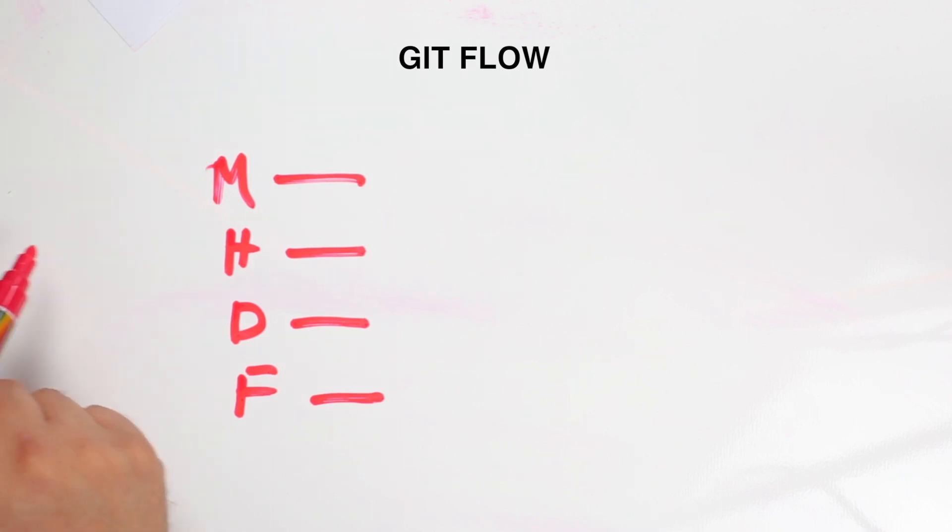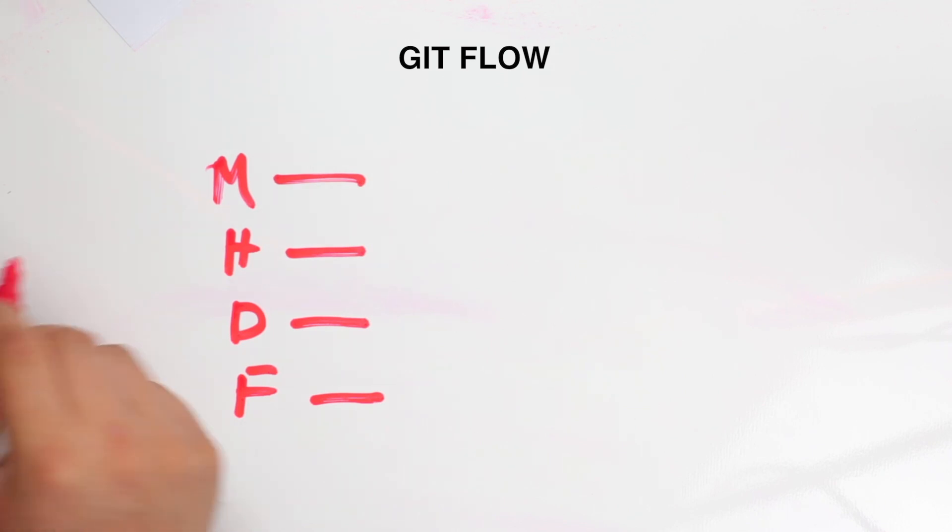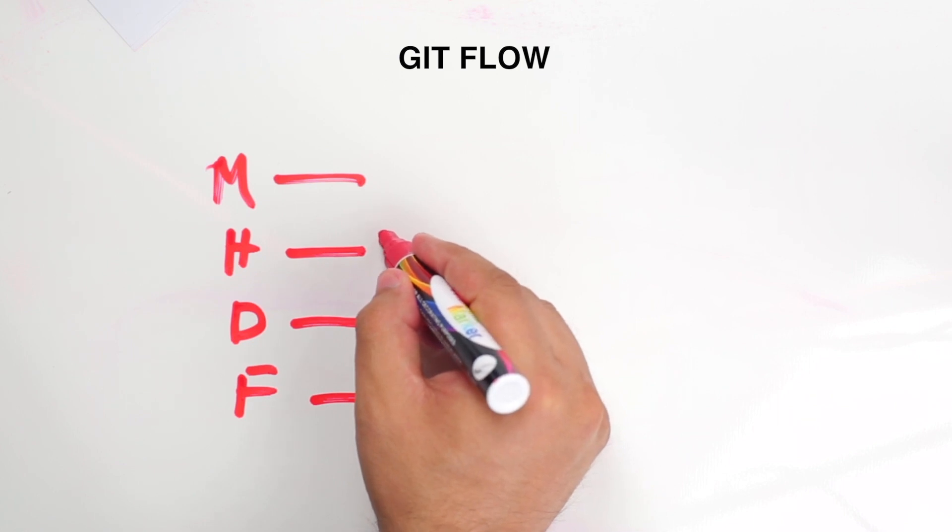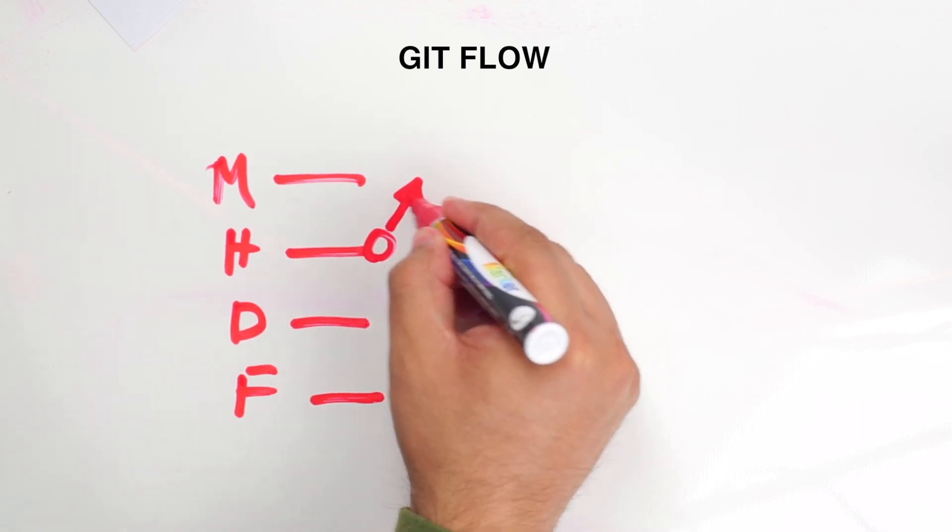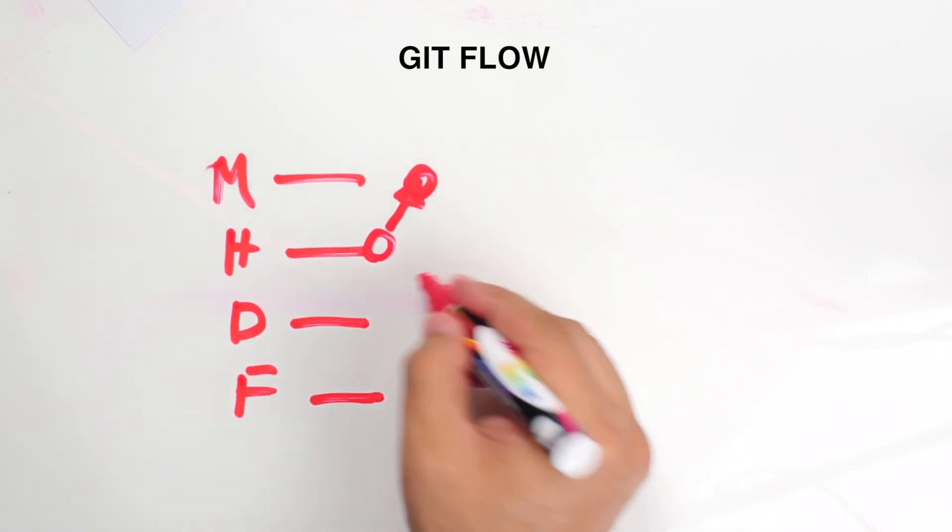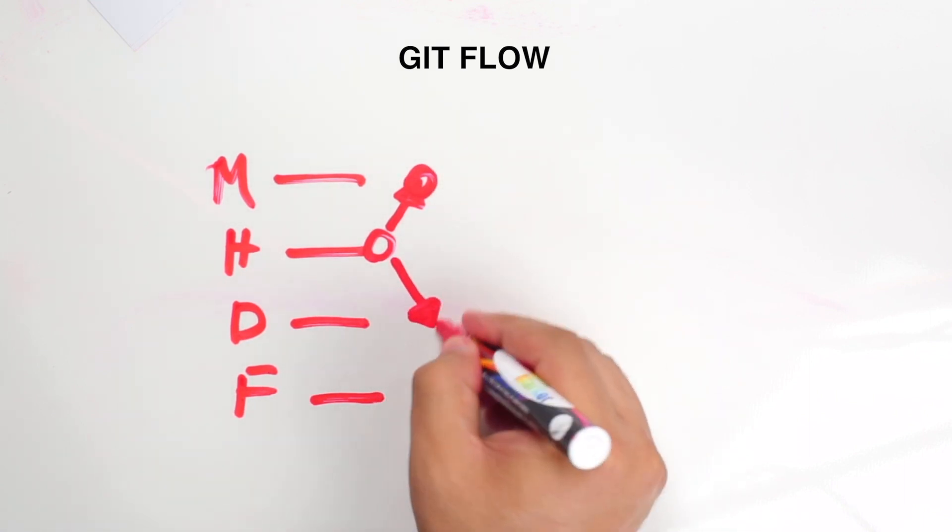The hotfix branch, the way that one works: like I said, if you have a situation with a CSS border that you need to quickly fix, what you do is you make the change, and once you're done with the change it double commits to both the master branch and the developer branch.